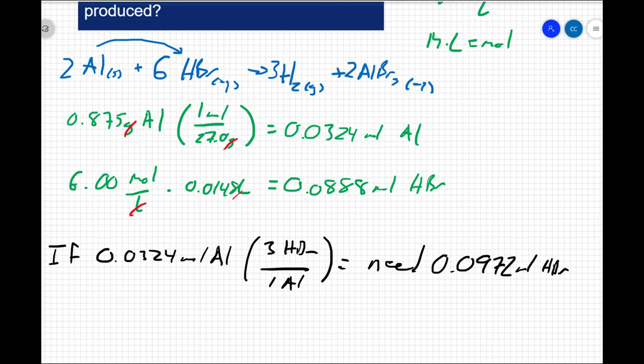Well, I don't have 0.0972 moles of HBr. I only have 0.0888 moles of HBr. That's going to make my HBr the limiting reactant, which means I'm going to have an excess of aluminum.